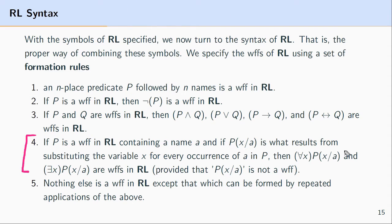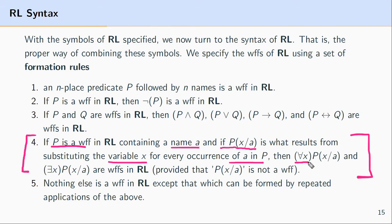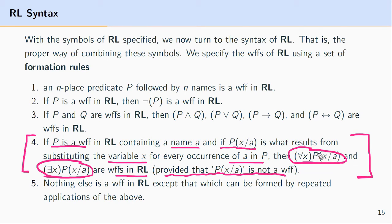The next rule states that if you have a well-formed formula P that contains the name A — or any name — and if P(x/a) is what results from substituting the variable x for every occurrence of A in P, then the formula ∀x P(x/a) or ∃x P(x/a) are well-formed formulas, provided that P(x/a) is not already a well-formed formula. This rule will require a little more specification, so we'll come back to it. What we want to identify now is this rule for forming quantified formulas — well-formed formulas with a quantifier associated with them.